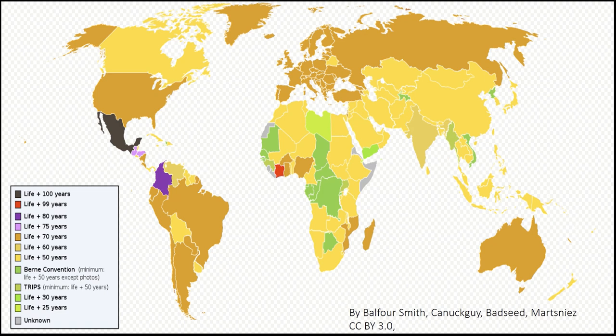Some older works may be subject to copyright in the United States but not in the public domain overseas, and vice versa — some materials may be in the public domain in the United States but not overseas. By 'public domain' I mean that copyright has no control over that item; the work is beyond the term of copyright protection.